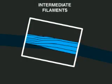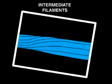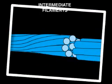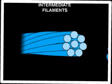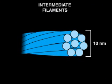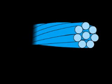Each filament is rope-like, consisting of eight thinner strands, made of a precise hierarchical arrangement of protein subunits.